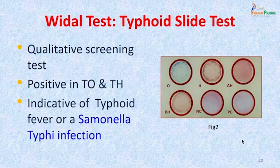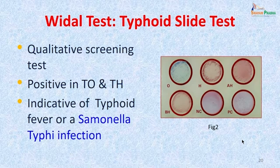The Widal test was done using a slide test, which can be a point-of-care rapid qualitative screening test — not a confirmatory test. It was positive in TO and TH, indicating the patient could be suffering from typhoid fever or Salmonella Typhi infection. The agglutination was seen in TH and TO; all others were negative, including the negative and positive controls.